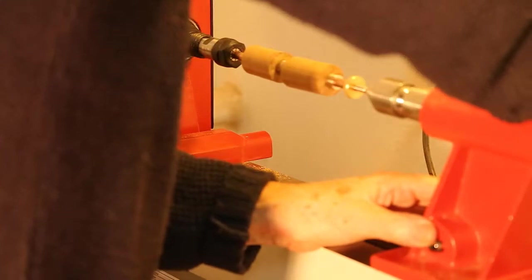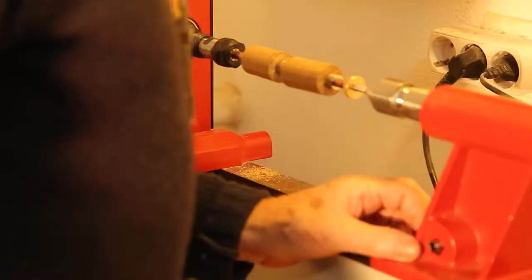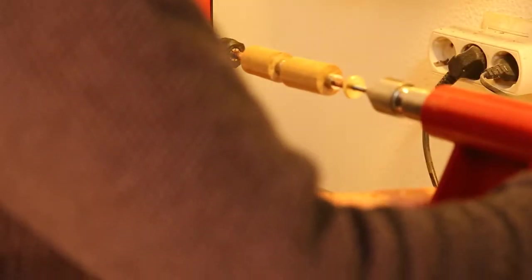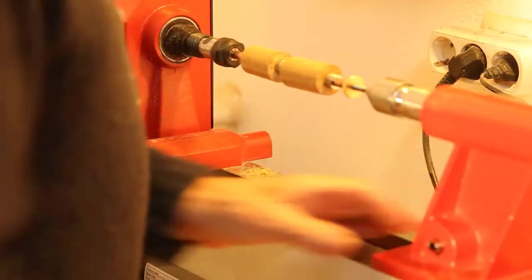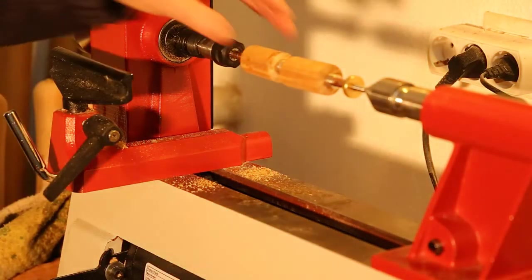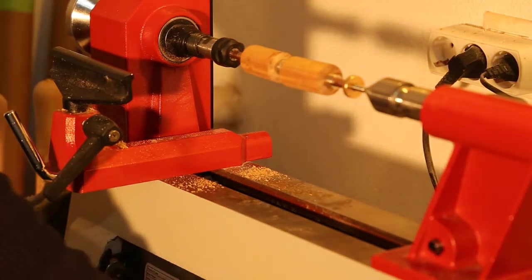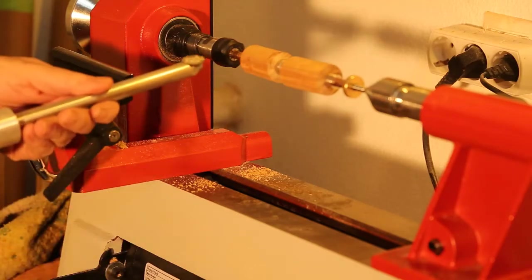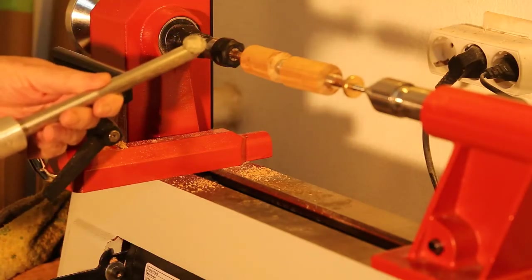And then you take up the tailstock. And there's a little hole in the end of the mandrel, which it goes into. Tighten the tailstock. Tighten the live center. And that's your setup to begin turning down the wood with the carbide cutter.